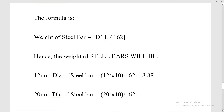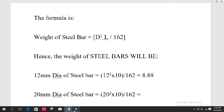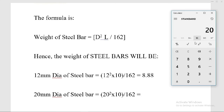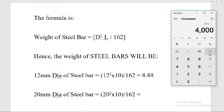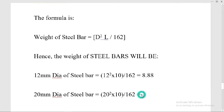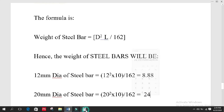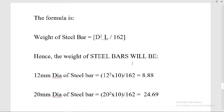Now let's move to the 20 millimeter diameter steel bar. We will use the same formula: 20² × 10 divided by 162. The square of 20 is 400, multiply by 10 gives 4000, then divide by 162. The weight of the bar is 24.69 kg.